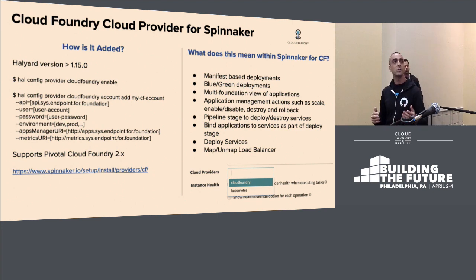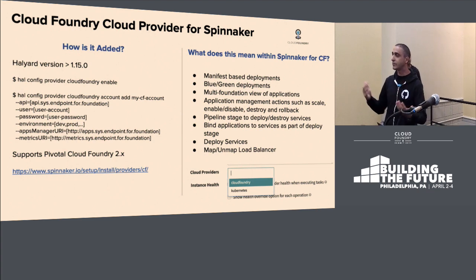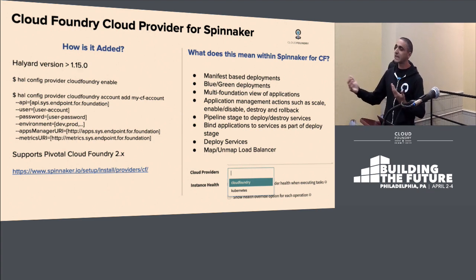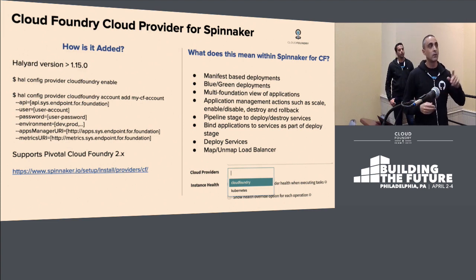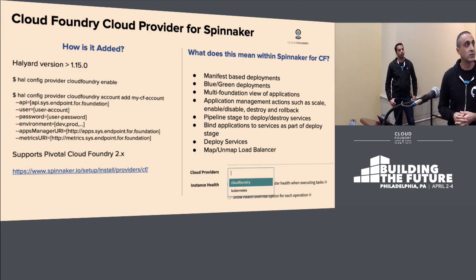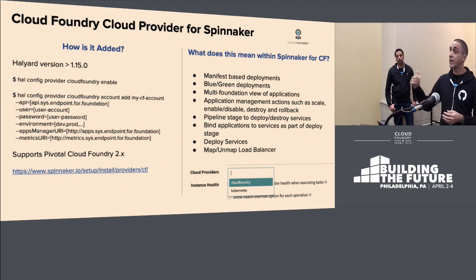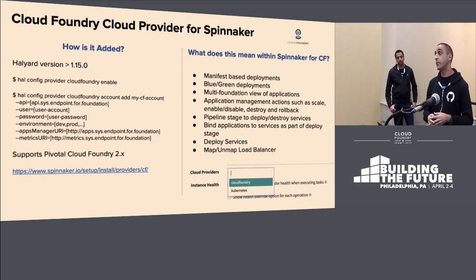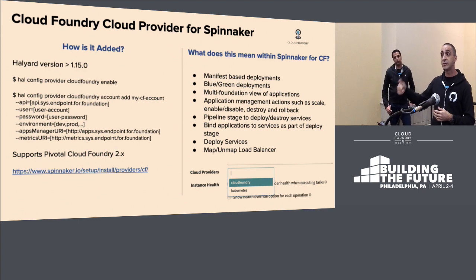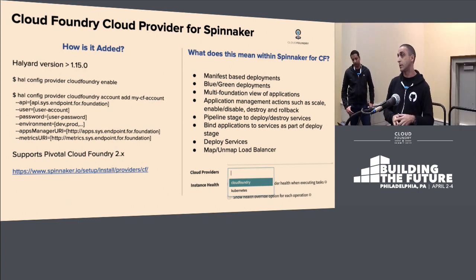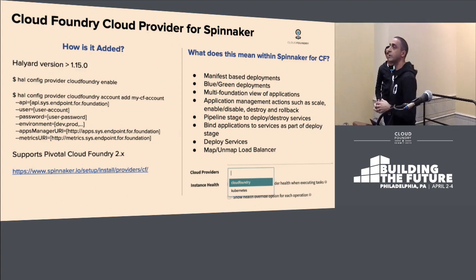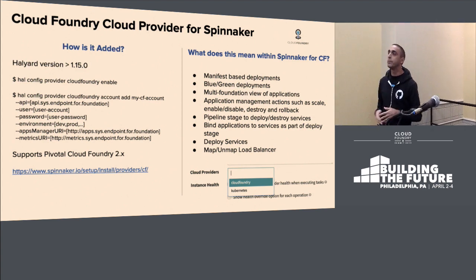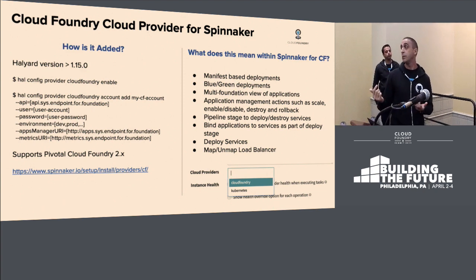When you're first working with Spinnaker and Cloud Foundry, the terms may seem unfamiliar, but they're actually mapping to what you do with the CF CLI. Recently they added the ability to deploy services — Spinnaker will reach into the Cloud Foundry marketplace, display those services, and allow you to create pipeline stages that create services. When creating a server group for deployment, you can also bind to those services.